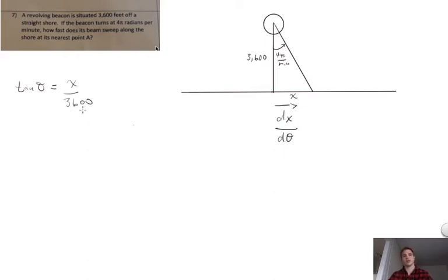So, to find theta, we would have to take the inverse tangent. And so we would get theta equal to tan inverse of x over 3,600.